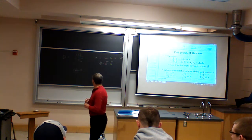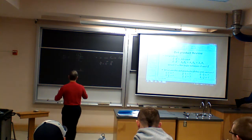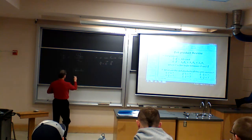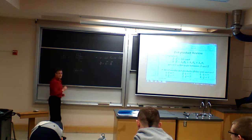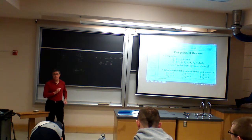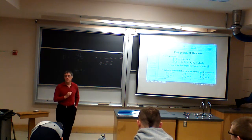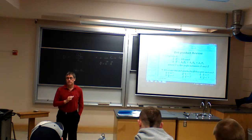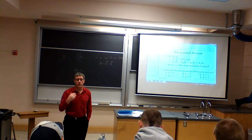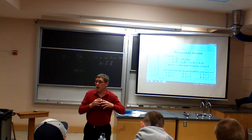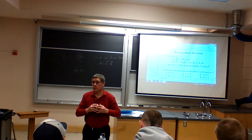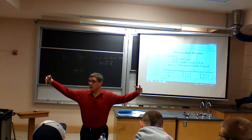What if I shrink the Gaussian surface so that it's inside the conductor? Now what's the field? Zero — because the charge in a conductor goes to the outside surface.